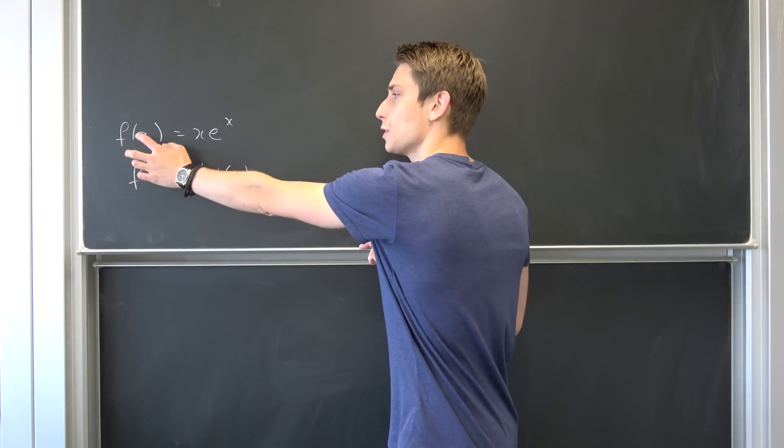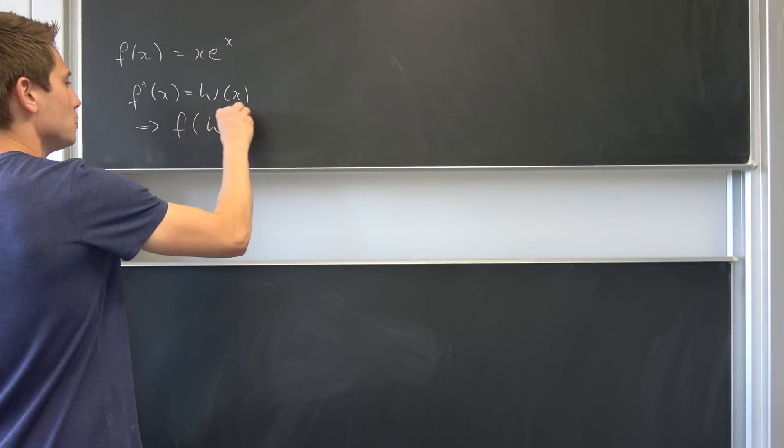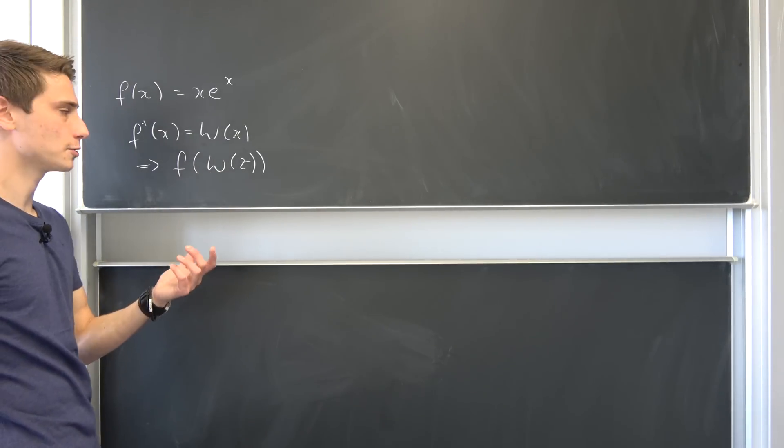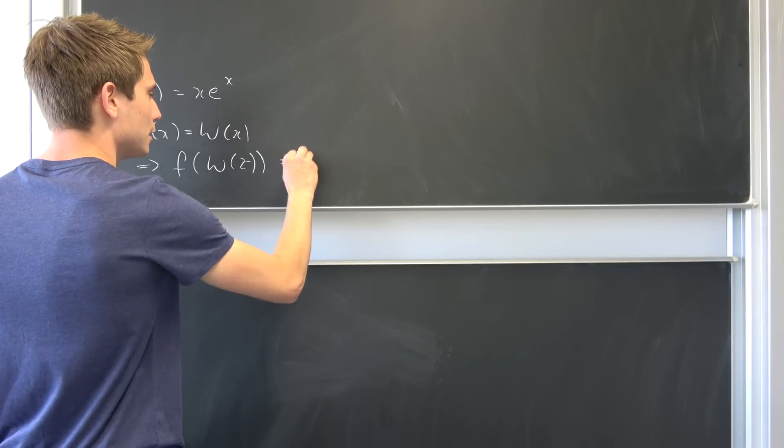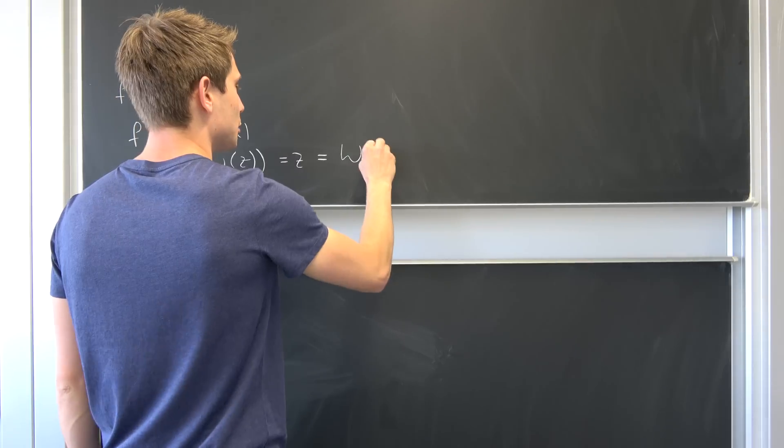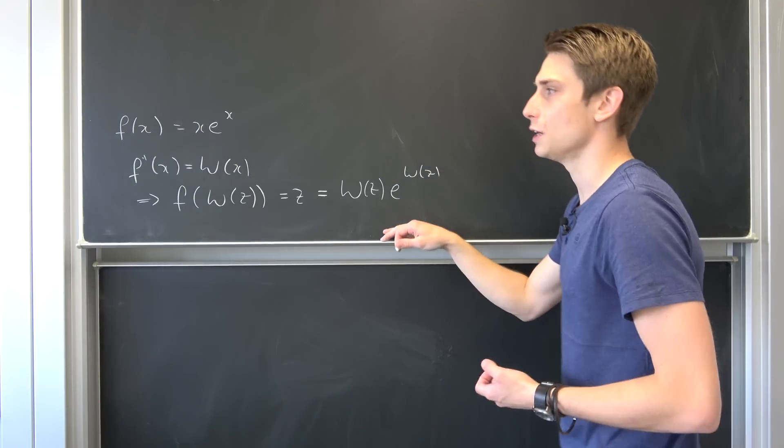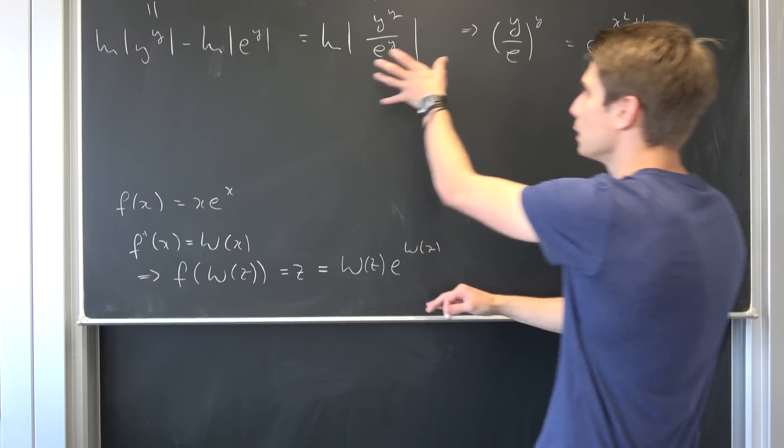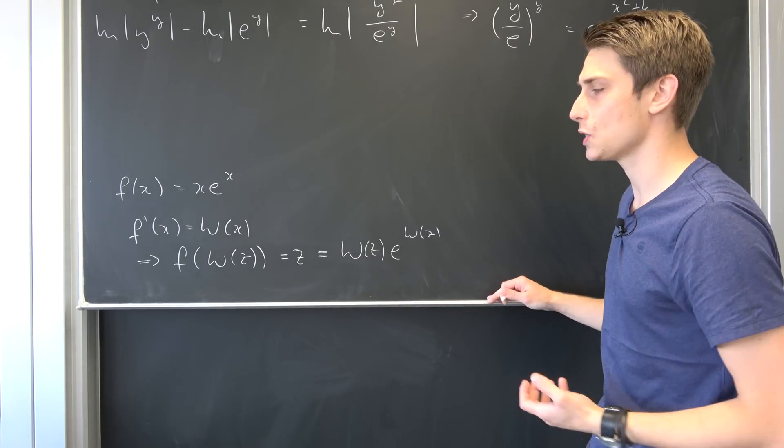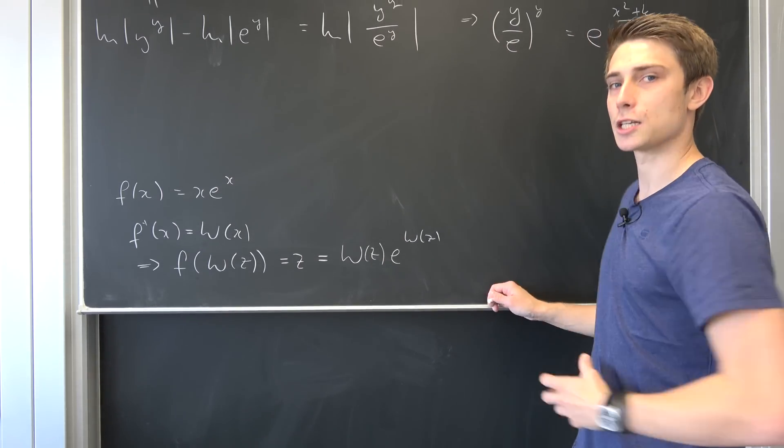And one property is if we plug this Lambert w function into here as the argument. So for example f of Lambert w of z for example. Let's put it that way. Well the function of the inverse function is just going to evaluate to the argument itself. So this is z being equal to and now we have to plug in the Lambert w function into here. w of z e to the w of z. And our goal for now is to bring this expression right here into this form. And then we will see if we can use the Lambert w function somehow to get a finite expression for our y.